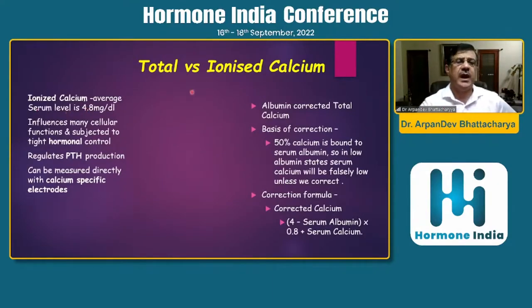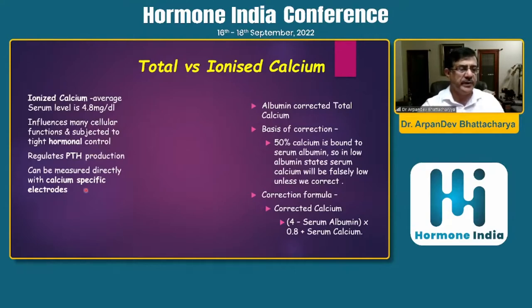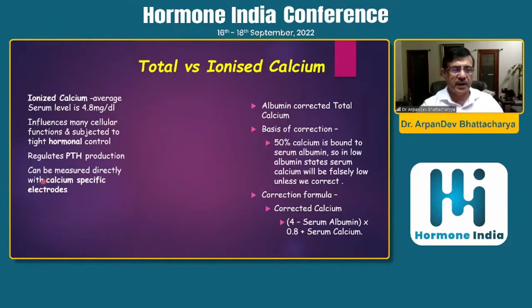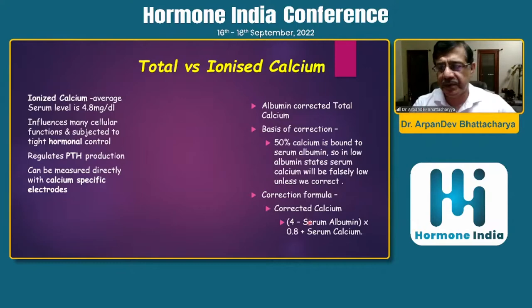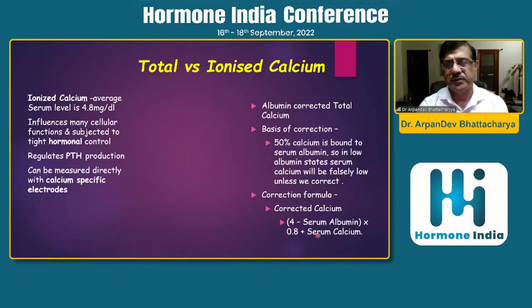When talking about ionized versus total calcium: ionized calcium is the physiologically active fraction influencing many cellular functions and is controlled by PTH. It is measured directly with a calcium-specific electrode. However, this is costly and only some institutes have it. In many cases, a reported ionized calcium abnormality is actually an electrode defect — a wrong or expired electrode gives a falsely abnormal result.